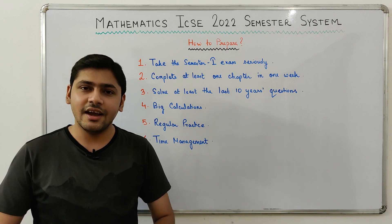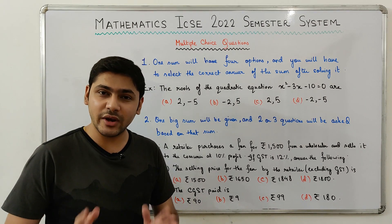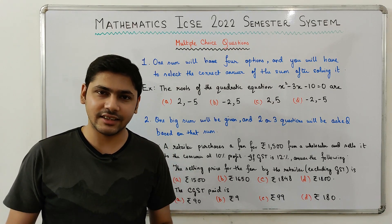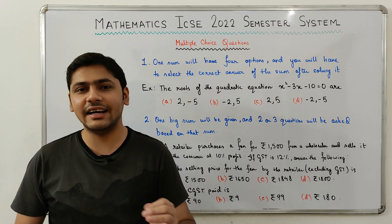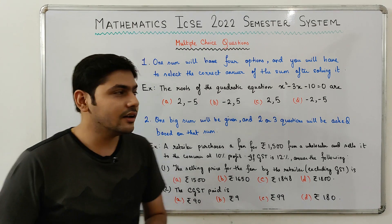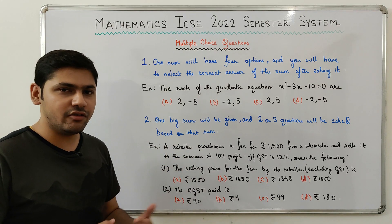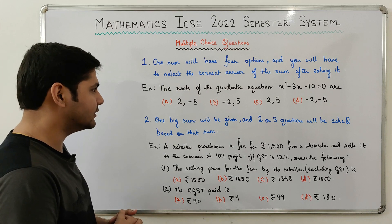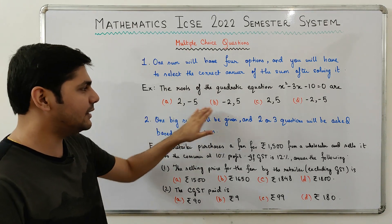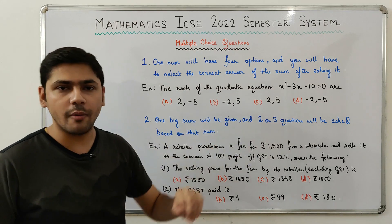Now let's look at the types of multiple choice questions that can be asked in the semester one examination. You will have to solve entire sums and select the correct answer from four options given. For example, Type 1: one sum will have four options and you must select the correct answer after solving it. For instance, from Quadratic Equations: 'The roots of the quadratic equation x² − 3x − 10 = 0 are?' — you solve it and select the answer from options A, B, C, or D.